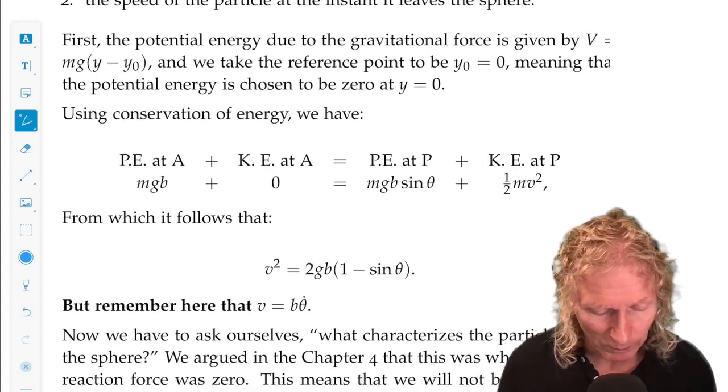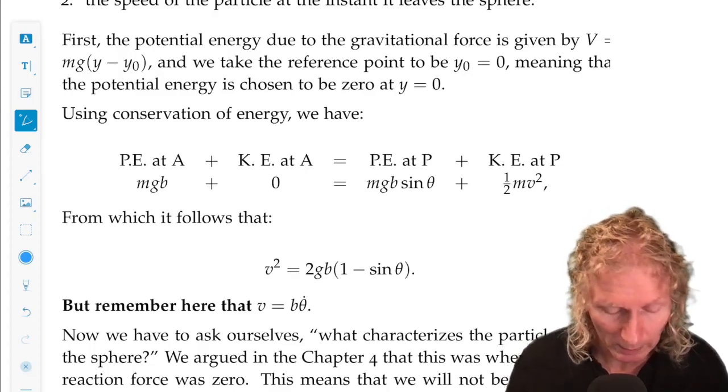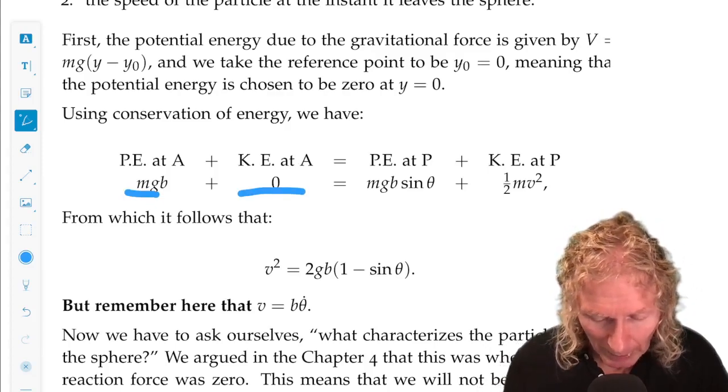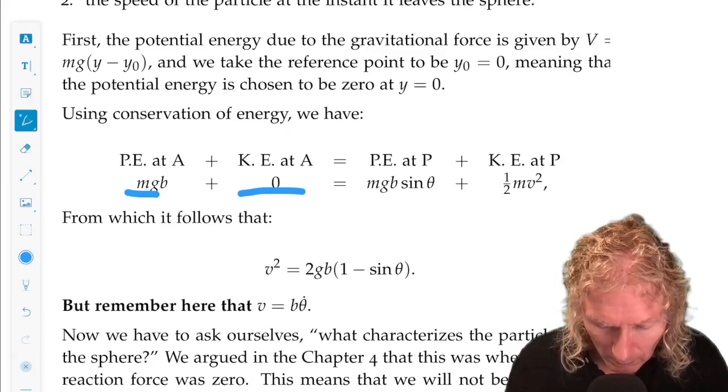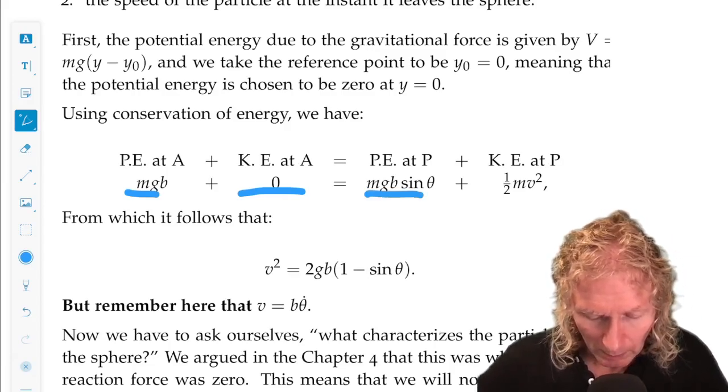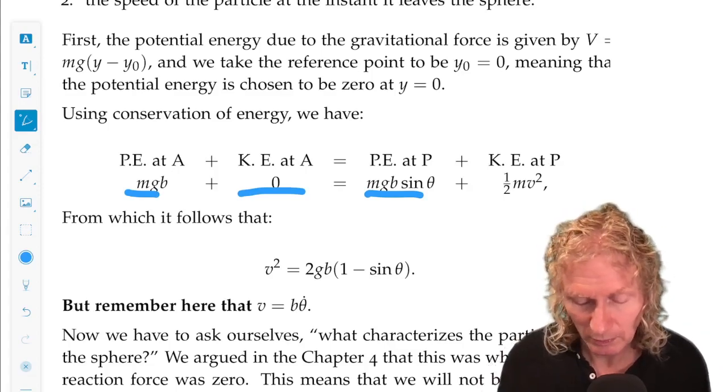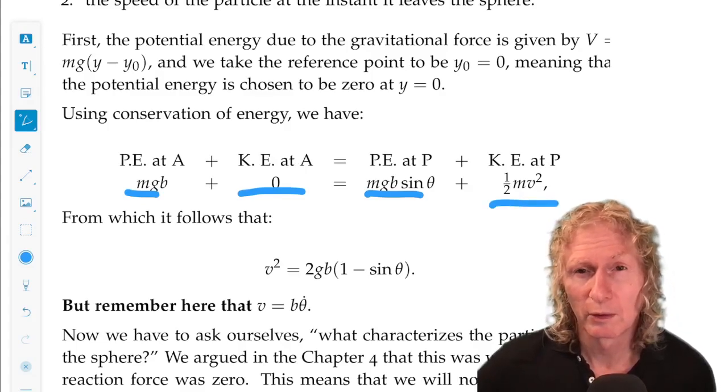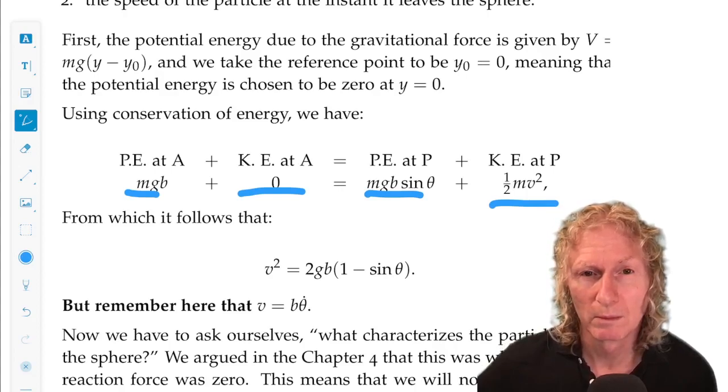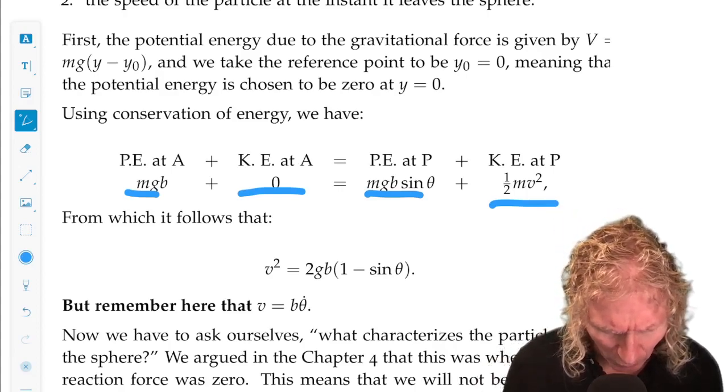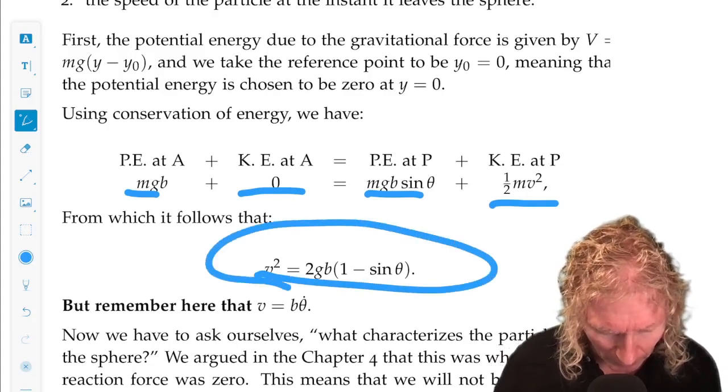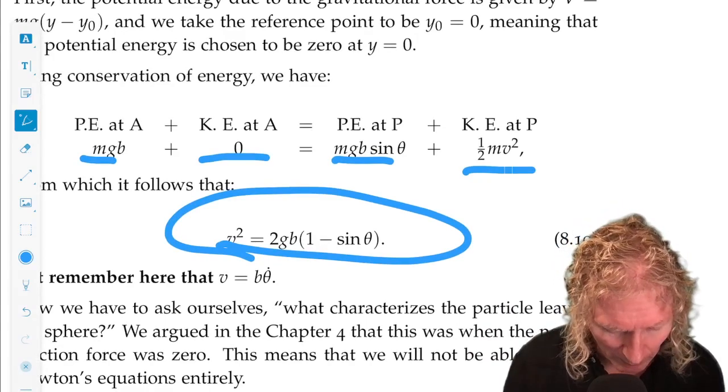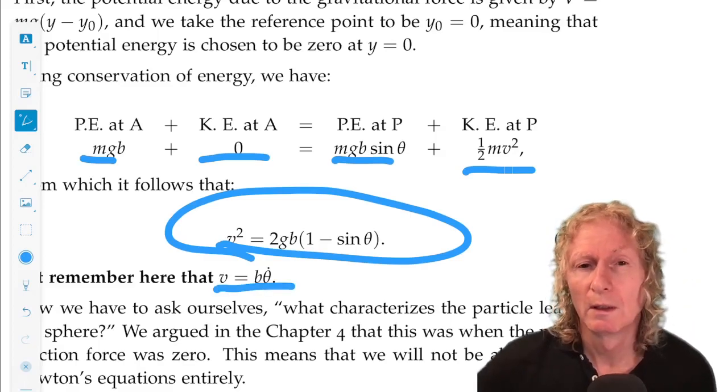Let's find the potential energy at the top point. That's just mgb. And it starts from rest, so there's no kinetic energy. And at any arbitrary point p, the potential energy is mgb, the height, b sine theta. Sorry, b sine theta is height. B is the radius of the sphere. And this expression for the kinetic energy. The velocity squared as a function of theta is given by this expression, which we already derived in a more difficult way earlier on. Remember, if we want to relate it to angular velocity, v is b theta dot.